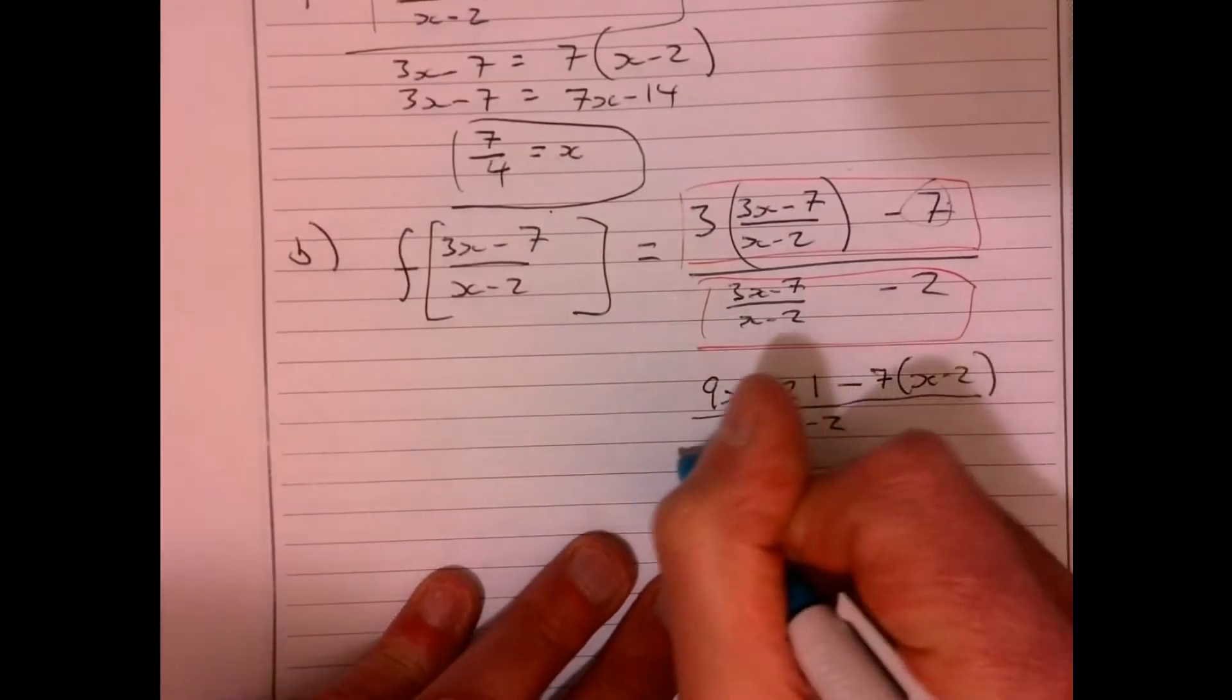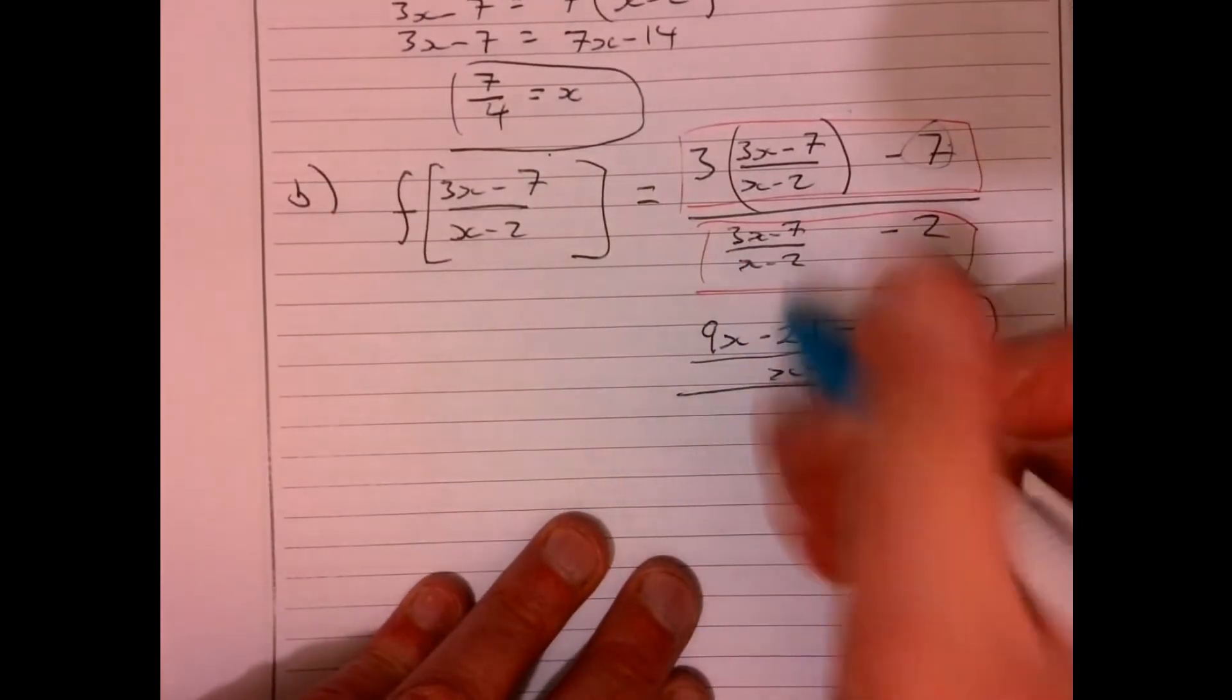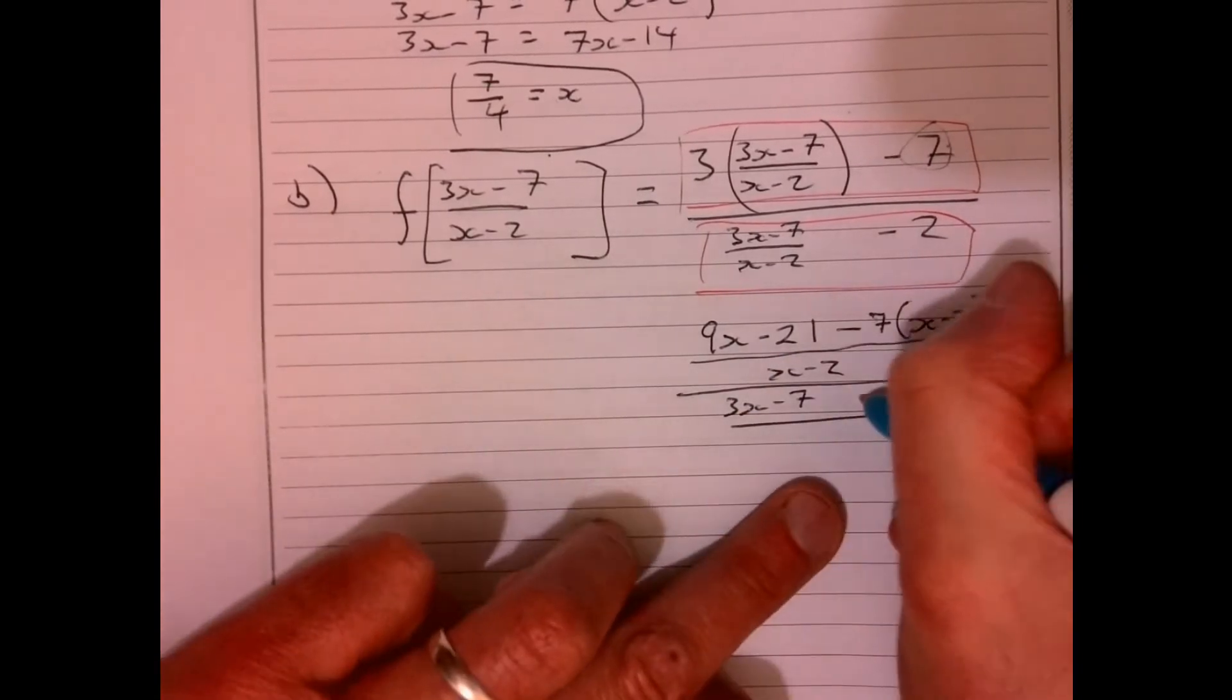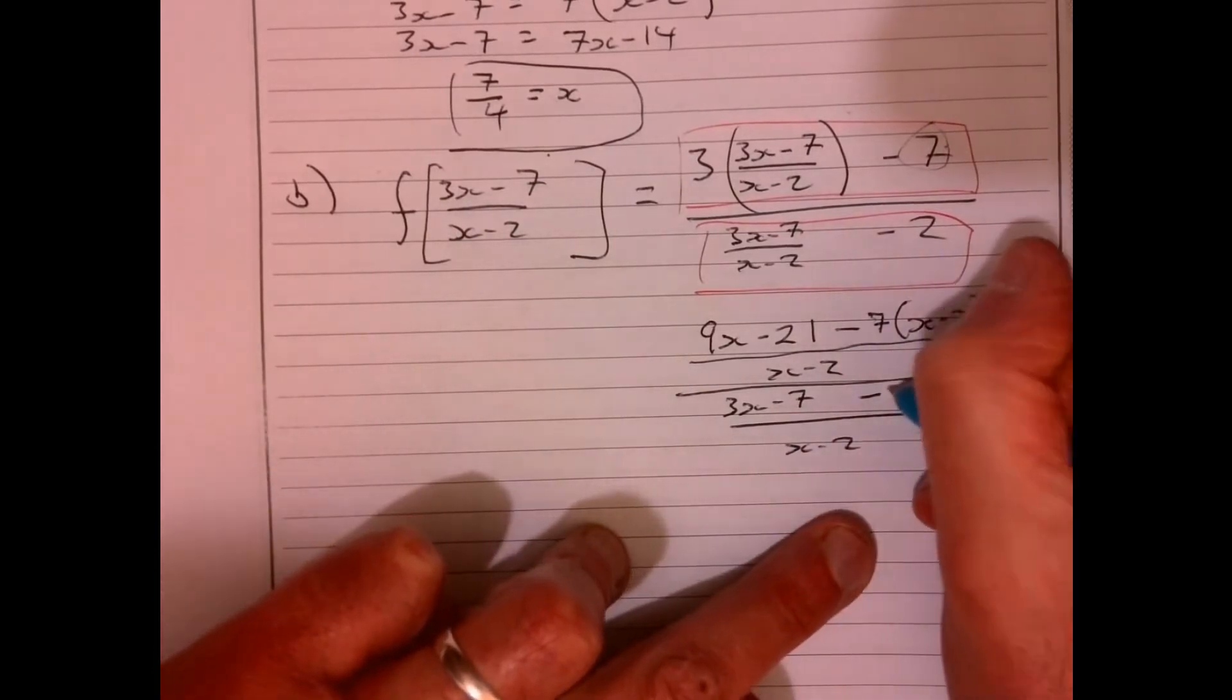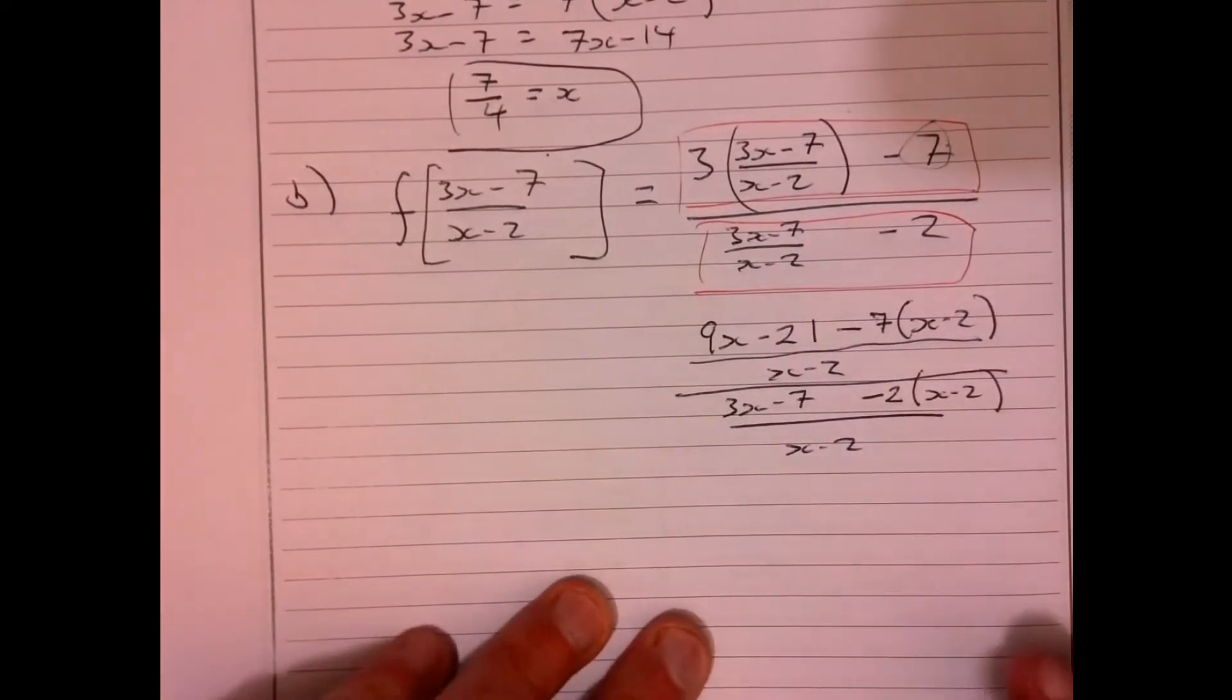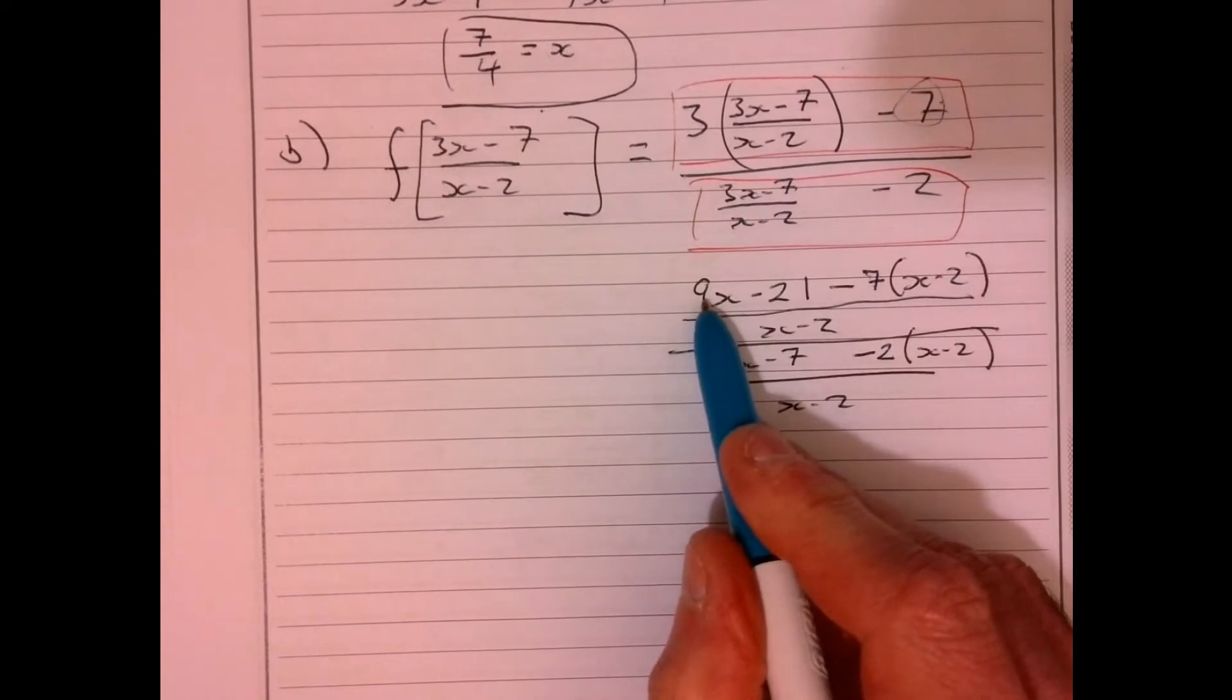And now I'm going to do exactly the same with the denominator. So I've got 3x minus 7, and I need to multiply this by x minus 2 over x minus 2. So it's going to give me this here. And again, it looks dreadful, doesn't it? But let's just tidy up what we've actually got.